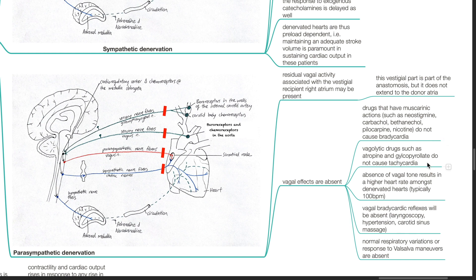Vagolytic drugs such as atropine and glycopyrrolate do not cause tachycardia. Absence of vagal tone results in a higher heart rate amongst denervated hearts, typically at 100 beats per minute.